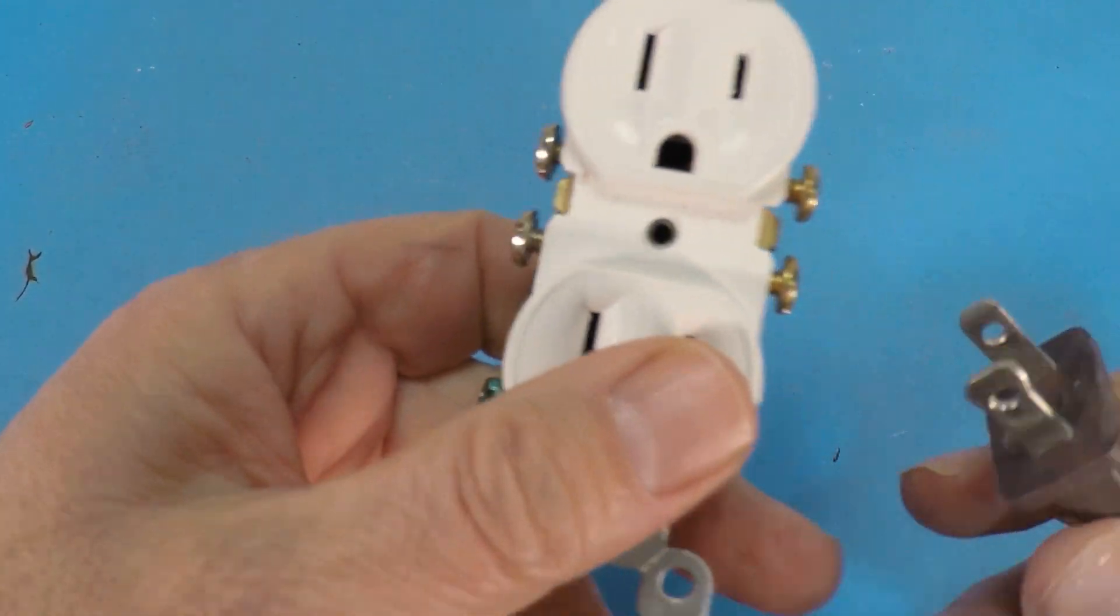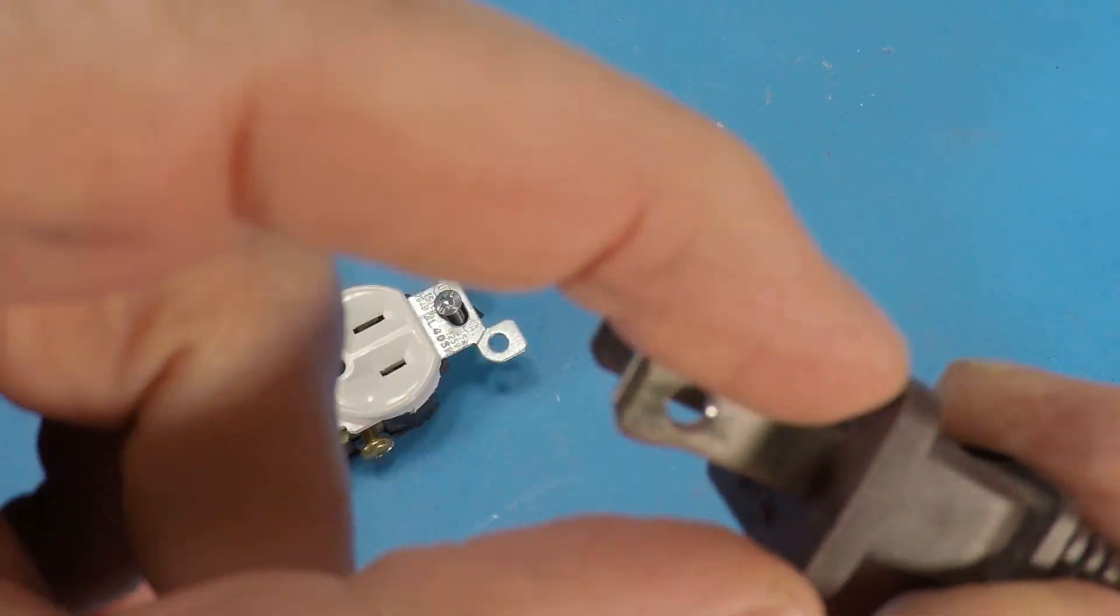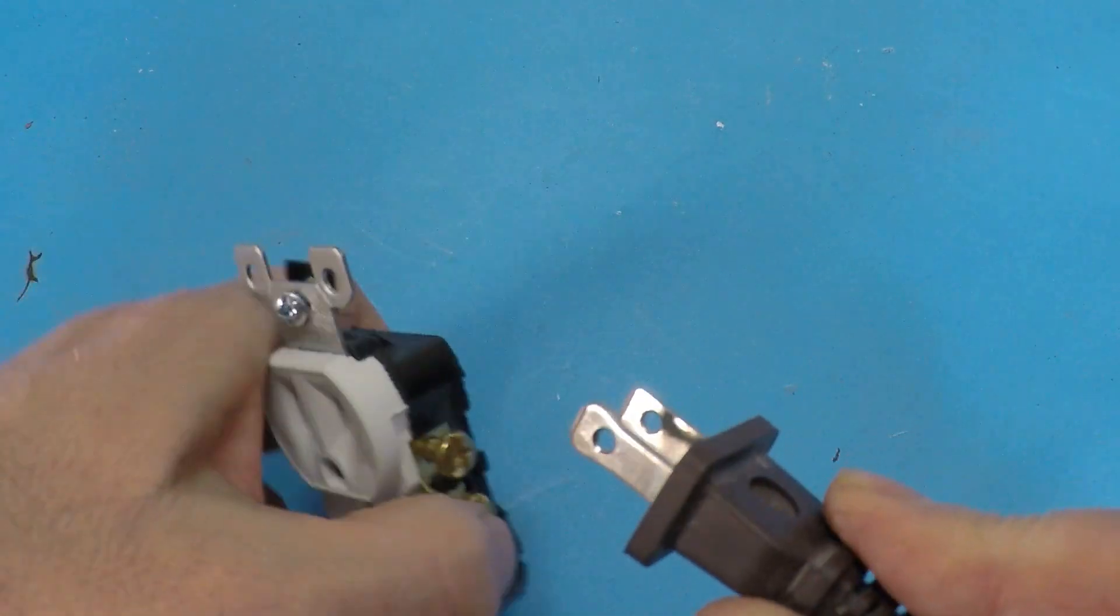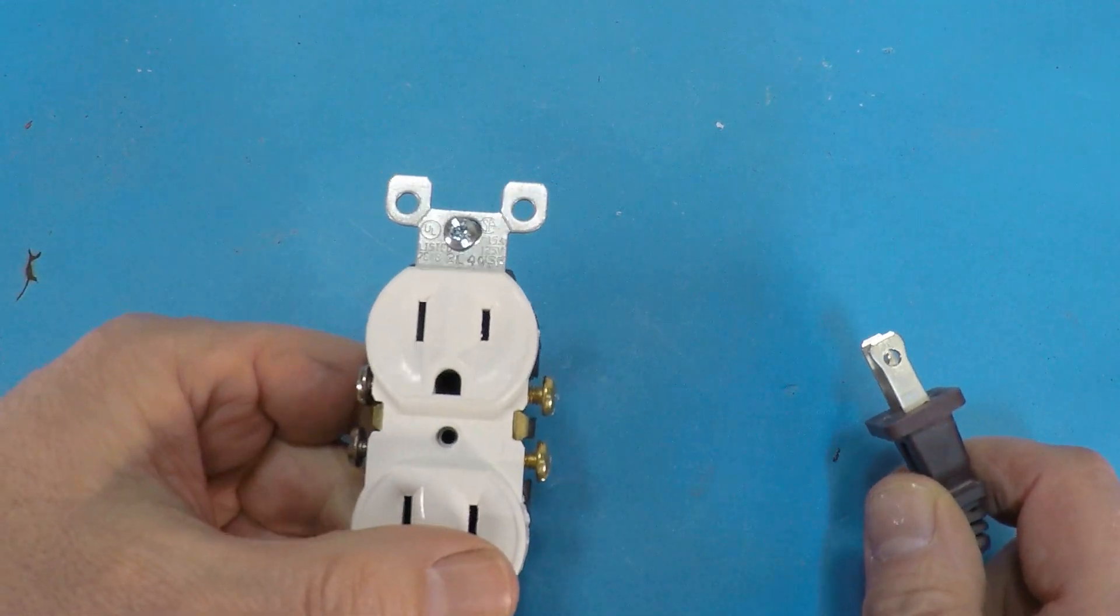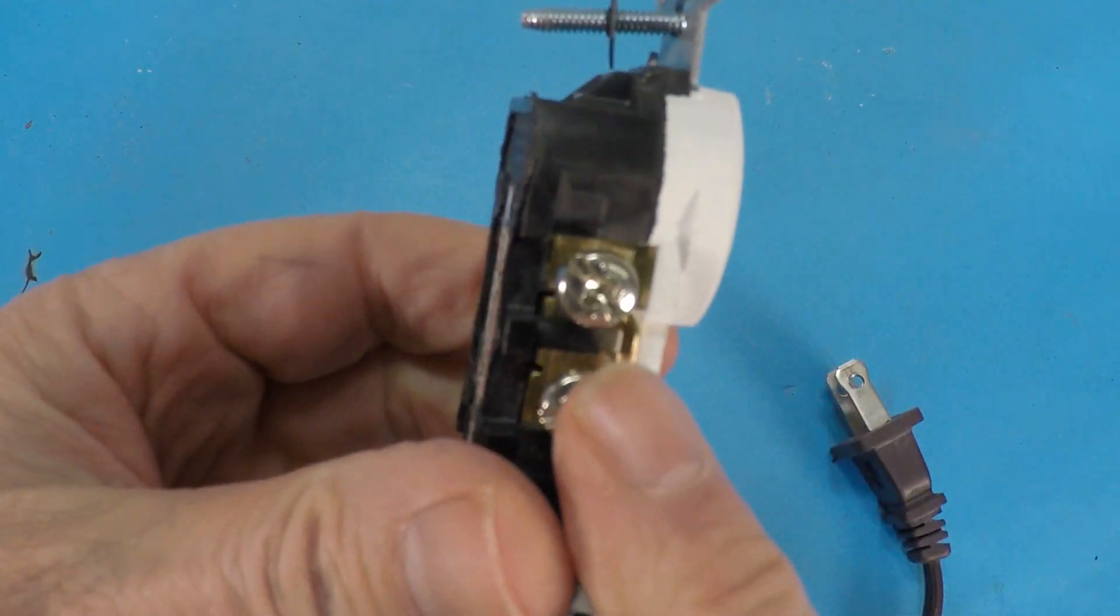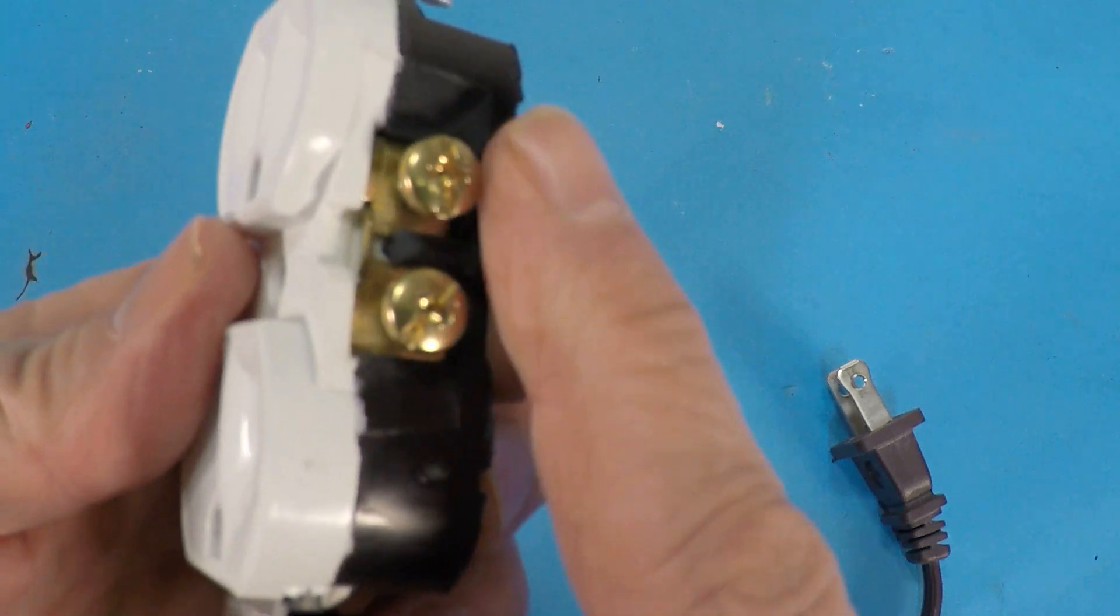So here we have this outlet again and here's the plug where you see this side is fatter than this one so it only fits in one way. The reason for this is polarity, and if you look at the outlet the left side here has got these silver screws and the right side has got the gold.